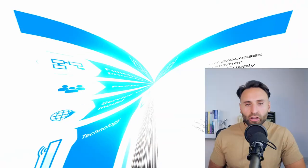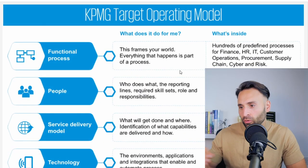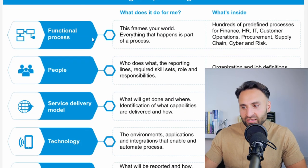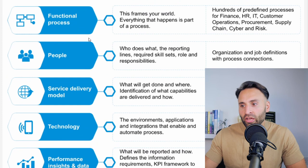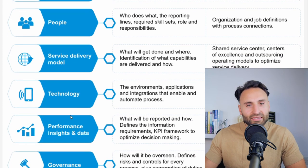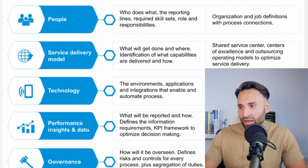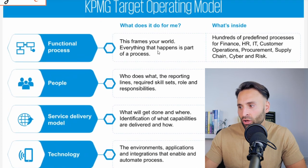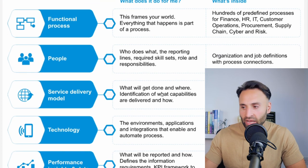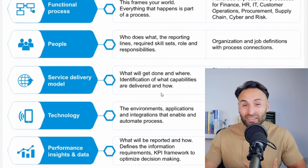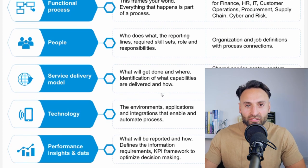One of the Big Four accounting firms, KPMG, also has a more detailed target operating model. They look at functional processes, people, service delivery model, technology, performance, insights and data, and governance. They break each of these down with individual questions which you can ask in order to help develop and form this target operating model.